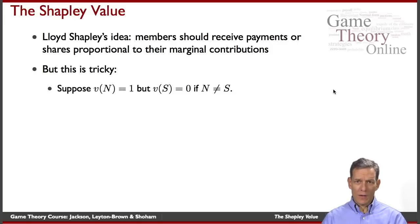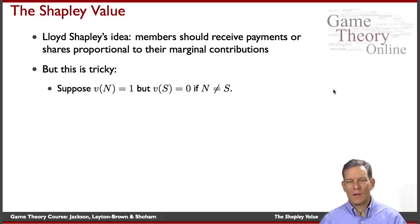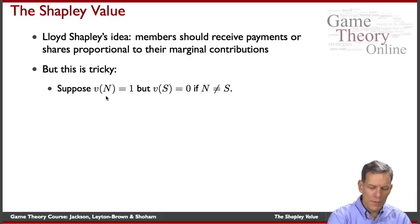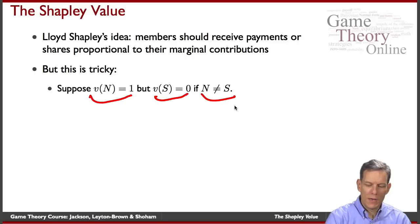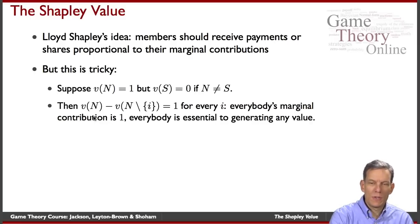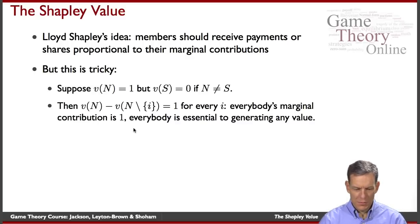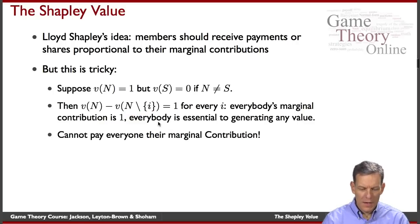Let's take a quick example to illustrate why we have to be careful. Suppose that everybody together in a society can generate one, but if we're missing any member of society we get zero. This is like a committee where all members must be present in order for it to do anything — if it's missing any of its members it can't decide on anything. So v(N) = 1 and v(S) = 0 for any S smaller than N. In this situation, the marginal contribution of any individual is one — everybody is essential for generating this value.